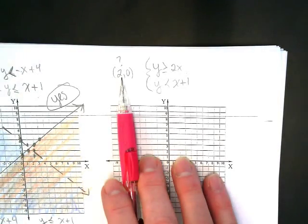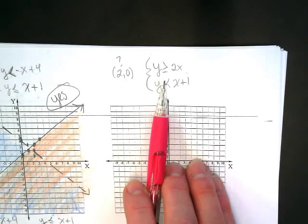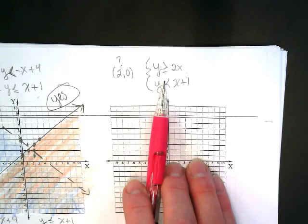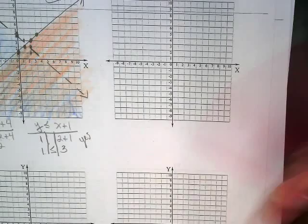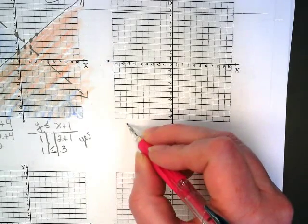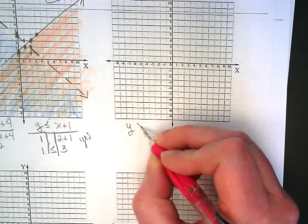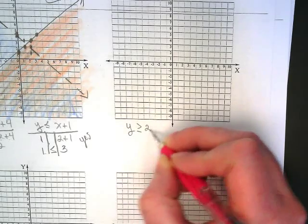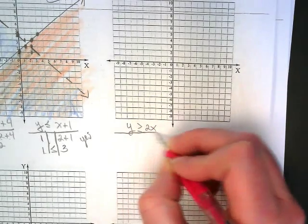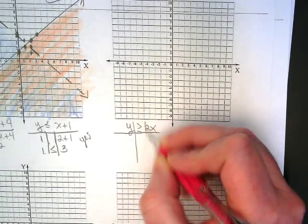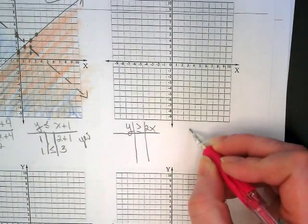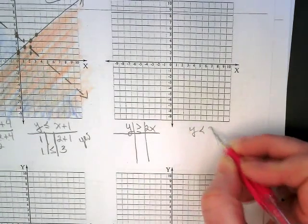Next question. Is 2, 0 a solution for this system of equations? We're going to practice it both ways. So first I'd like you to rewrite the inequalities down below. Y is greater than or equal to 2x. And y is less than x plus 1.